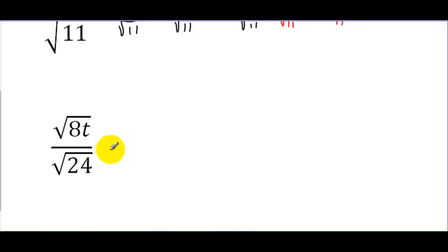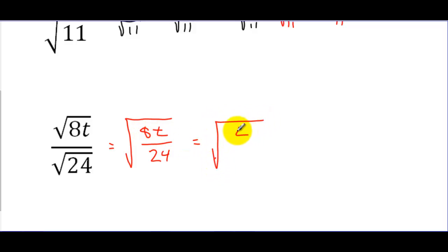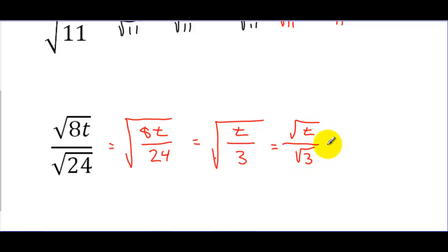For this last example, sometimes it's easier to work backwards. I'm going to take the expression — which has the numerator and denominator separately square-rooted — and put it back under one big radical. The reason is that 8/24 is a fraction that simplifies: dividing top and bottom by 8 gives 1/3. So now I just have the square root of 1/3, which I separate back into square root of 1 over square root of 3. The square root of 1 is just 1, so I need to fix the square root of 3 in the denominator.